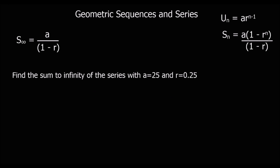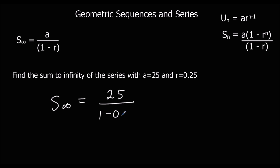Here's another question. The sum to infinity is a / (1 - r), which is 25 / (1 - 0.25). So 25 / 0.75 gives us 100/3, which is 33.3 recurring.